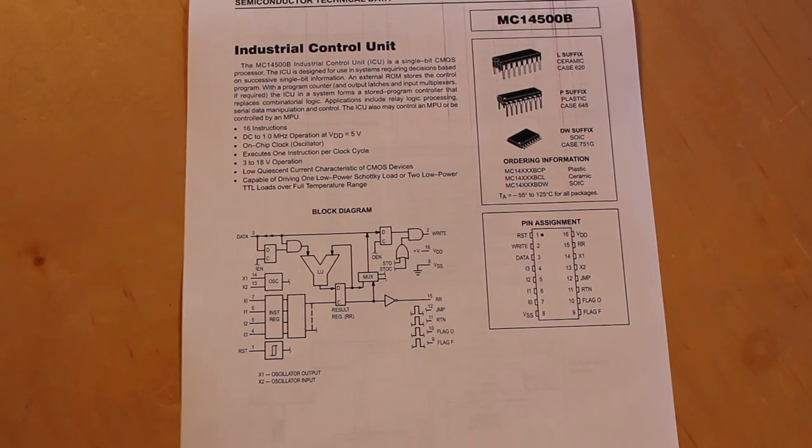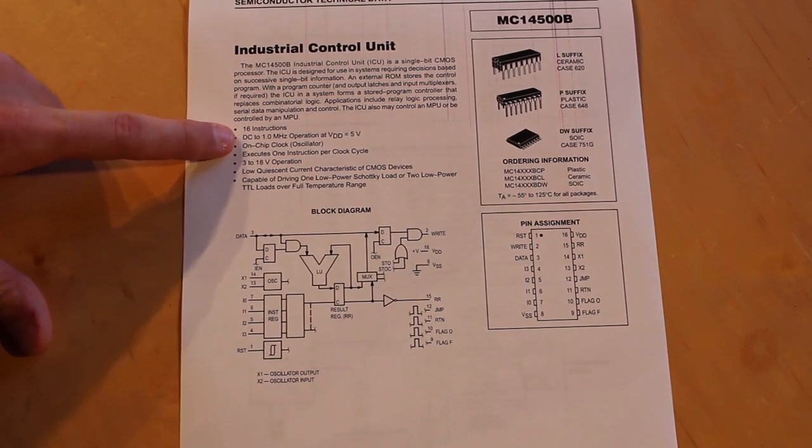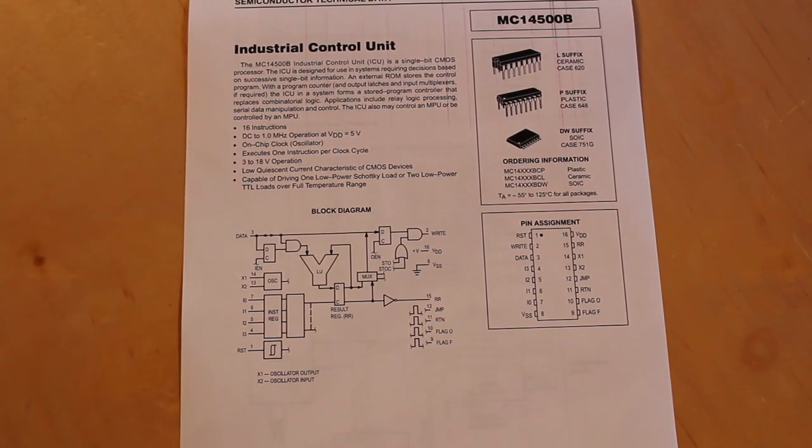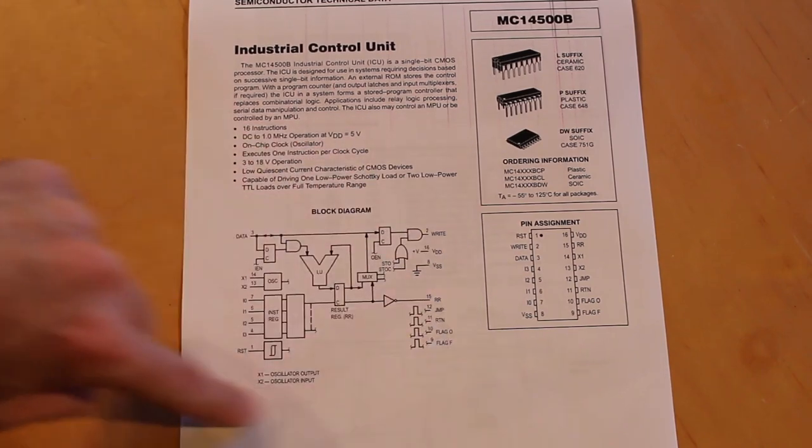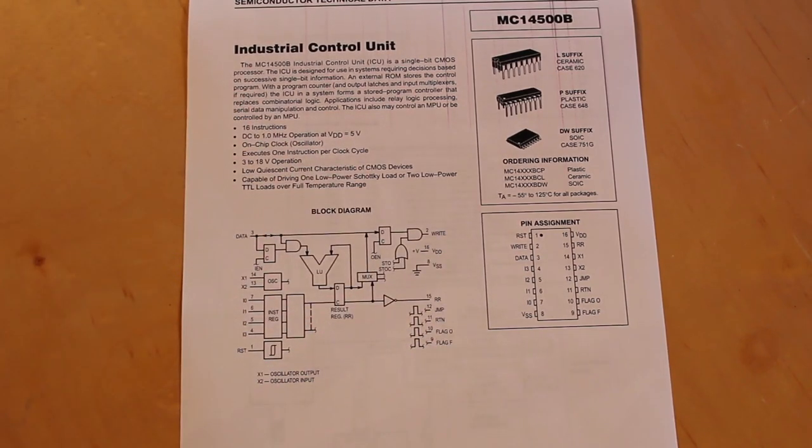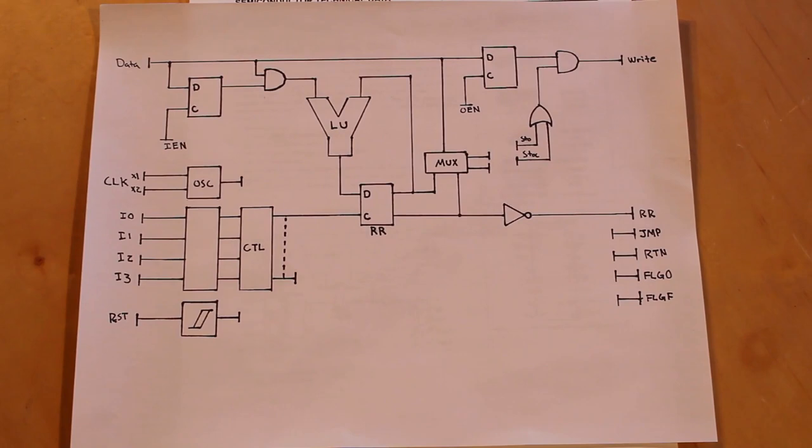Now it's listed as an industrial control unit, but if we read just the very first sentence here, it says the MC14500B industrial control unit is a single bit CMOS processor. Now that's what I'm talking about. Now we're on the right page. We have something that is a processor and we're all the way down to a one bit data bus. So this sounds like something that might be doable. Now this chip in and of itself has, you can see right off the bat, 16 instructions, and it can run up to one megahertz. I do not expect that level of speed if we were to build this out of vacuum tubes, but that's pretty impressive. Seems to be a pretty interesting, capable little chip. And you can see we have a little block diagram down here. And this is a little small, so I redrew it a little bigger so we could get a better look at it.